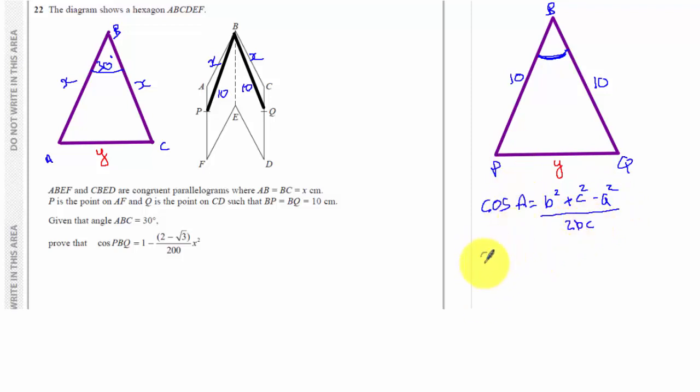So there's a formula for that question. I just need to put the right letters in. So rather than cos A, it's the cos of PBQ. B squared, well, really, we keep the letters opposite, don't we? So this 10 here is going to be little P, and this 10 here is going to be little Q. So I'm going to have P squared plus Q squared minus Y squared over 2PQ.